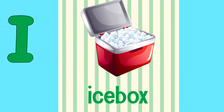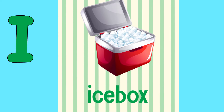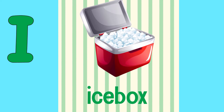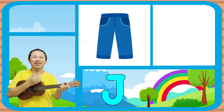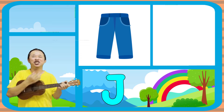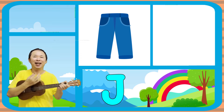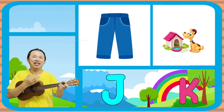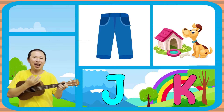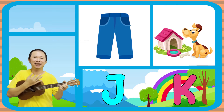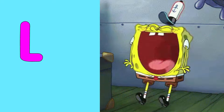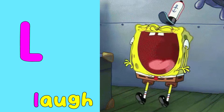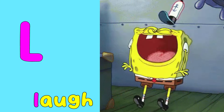I is for Icebox, I. J is for Jeans, j. K is for Cannon, kuh. L is for Laugh, la.